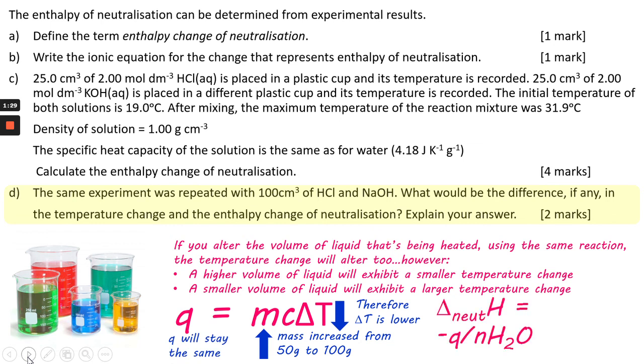So taking that into account for delta-neut-H calculation, minus Q over number of moles of water, because it's an enthalpy change in terms of 1 mole of water, Q stays the same as we've already worked out. N is going to be 1 mole of H2O, so therefore delta-neut-H will remain unchanged.